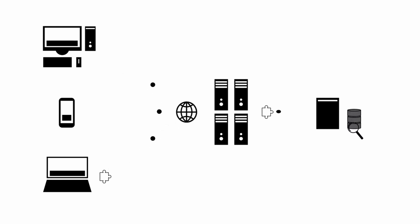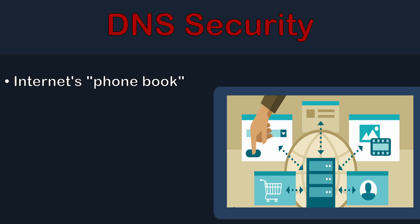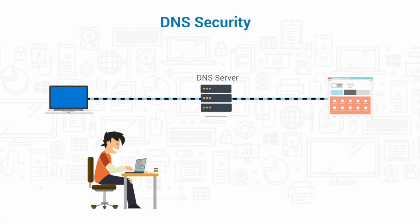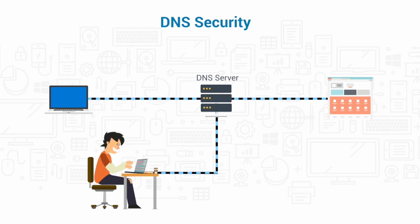Another often overlooked vulnerability is DNS security. DNS is like a phone book for the internet — it takes names that people can remember and converts them to IP addresses. The problem is that DNS queries and responses are transmitted in clear text by default, meaning anyone could intercept the information during transmission, including someone with malicious intent. For example, a hacker could send false information to a DNS server, knowing that the server will cache it to make for faster connections in the future.